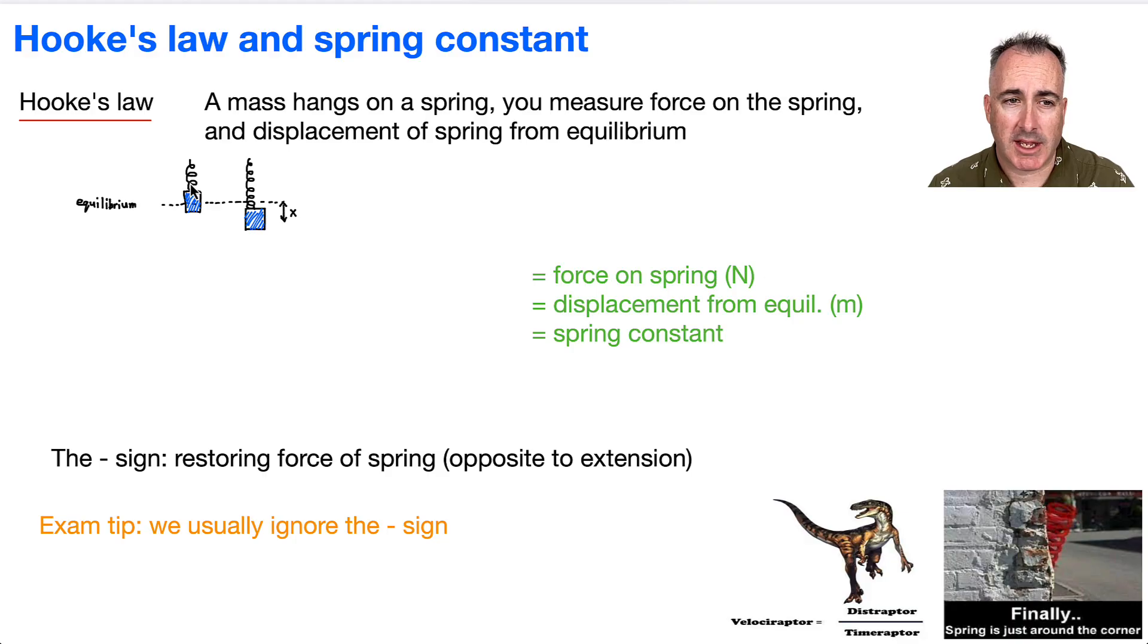So if you have a mass hanging from a spring, and you measure the force on that spring, and you measure the displacement of that spring from equilibrium. For example, if it's sitting like this, then there is its equilibrium in the middle. And if I put more masses on the end of it, then of course it's going to stretch out a little bit more. And this stretchiness, this difference, this is the displacement.